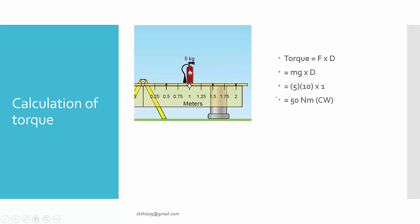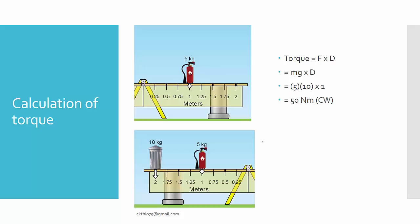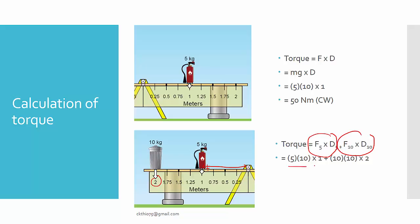If you have two objects on a seesaw, you find the torque for each individually. For the 5 kg object, calculate its torque using its distance; for the 10 kg object, multiply 10 times g times its distance of 2 meters. Do take note that even if the magnitudes are the same, the directions may differ — one torque is anticlockwise and the other is clockwise.